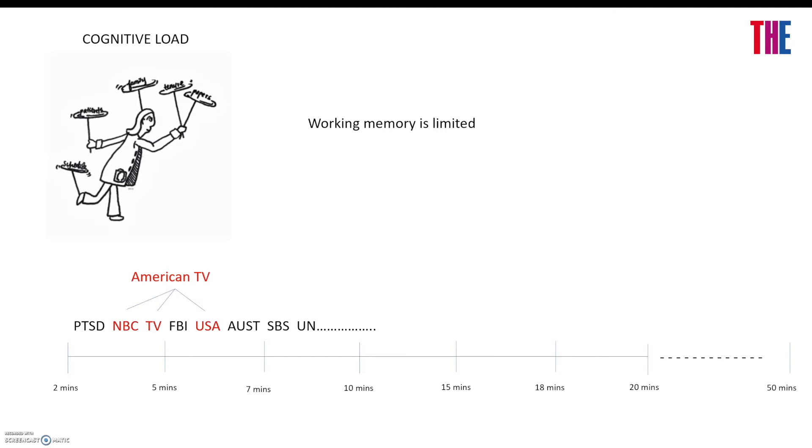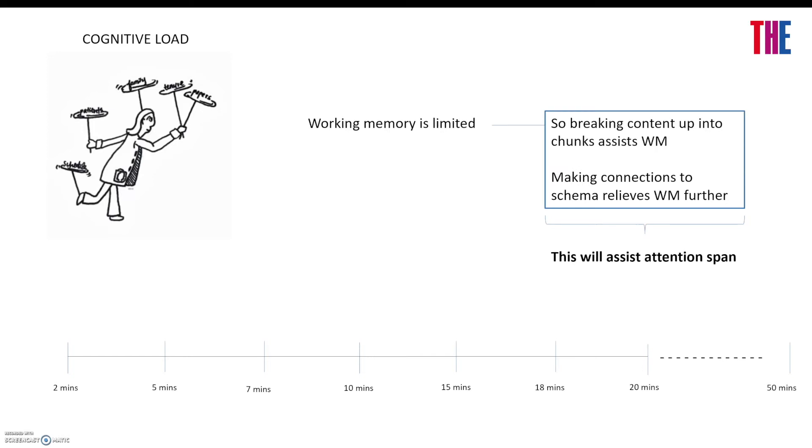If we try to connect the content to what we already know, we free working memory space again as the number of items to process seems to be reduced. So breaking content up into chunks assists working memory and making connections to schema relieves working memory further. Both of these will assist attention span.